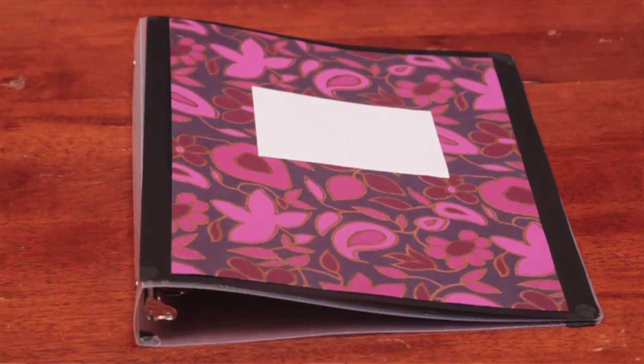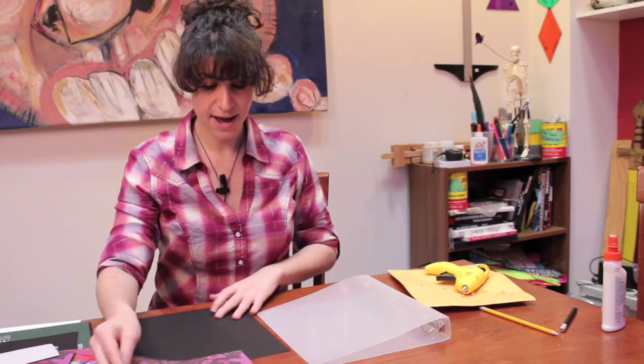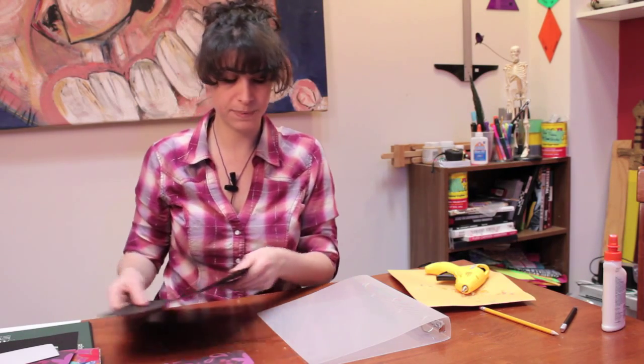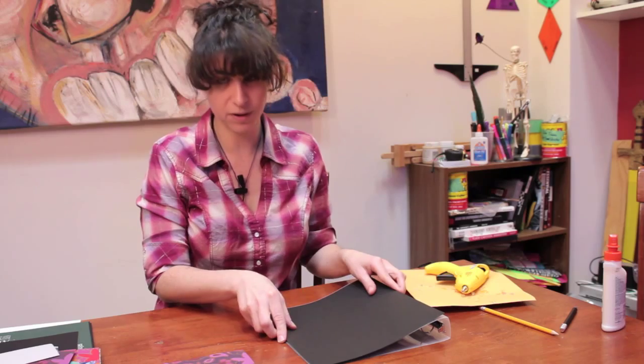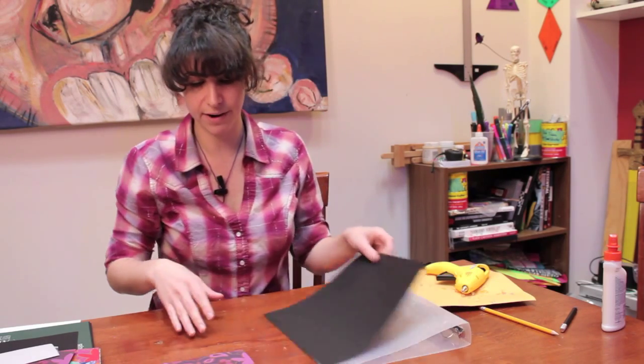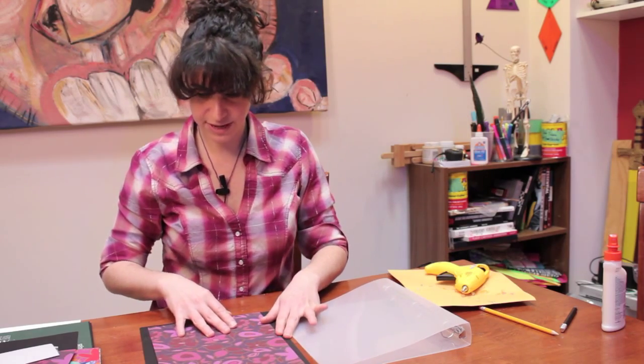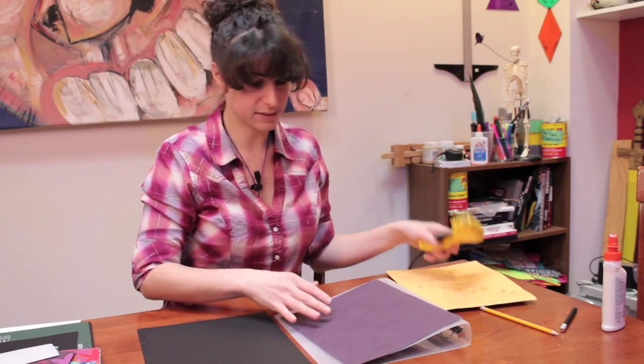What I've done is I've taken a decorative piece of paper, you can take whatever kind you like, and I've cut out a larger piece of black construction paper to be the same size as the binder to cover the background area. And I'm going to glue them together, and then we're going to attach them to the binder itself.